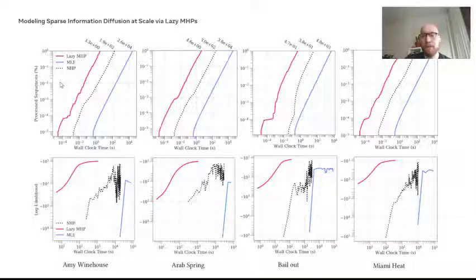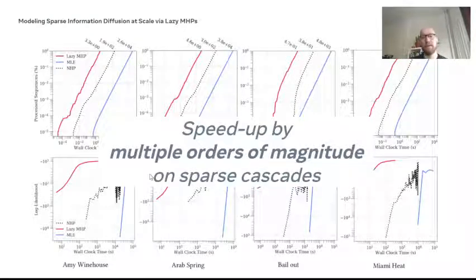We're comparing standard maximum likelihood estimation (the blue line), our Lazy MHPs (the red line), and also Neural Hawkes processes, one of the state-of-the-art methods for deep learning based approaches (the black dotted line). The lower row shows a similar comparison but now the y-axis is the log likelihood of the model, showing how fast we are learning a good model.